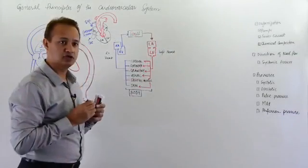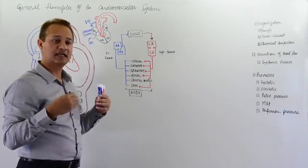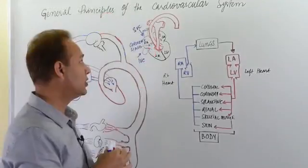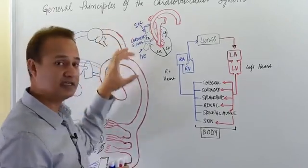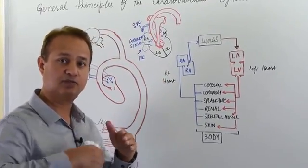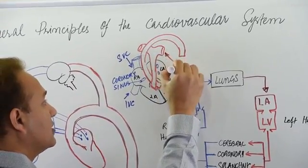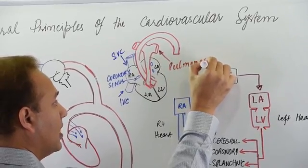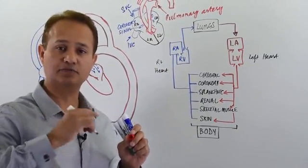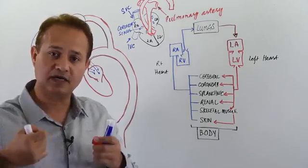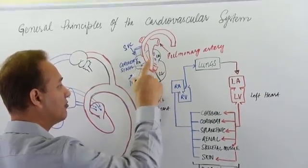The heart receives blood for two purposes: to pump it out (its pumping function), and to use it for its own nutrition. Arteries are defined as all vessels that bring blood out of the heart toward the tissues. The pulmonary artery, for example, brings blood out from the right ventricle.